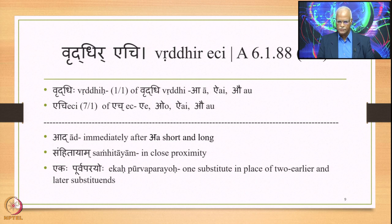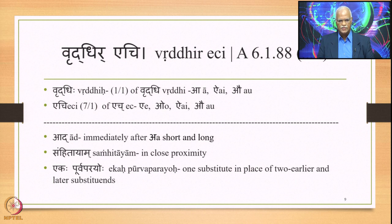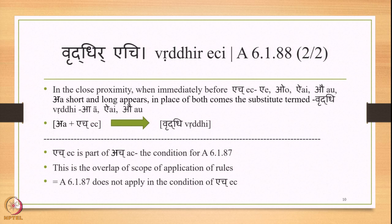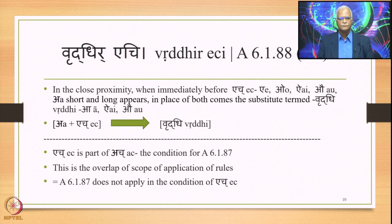We also have Ekapurwaparayoho, meaning one substitute in place of two — the previous and the latter. Putting all these together, the meaning of the sutra Vriddhi Rechi is: in the Samhita mode, when immediately before Ech (that is, E, O, Ai, and Au) there appears A short or long, then in place of both of them comes the substitute termed Vriddhi — namely Ā, Ai, and Au.